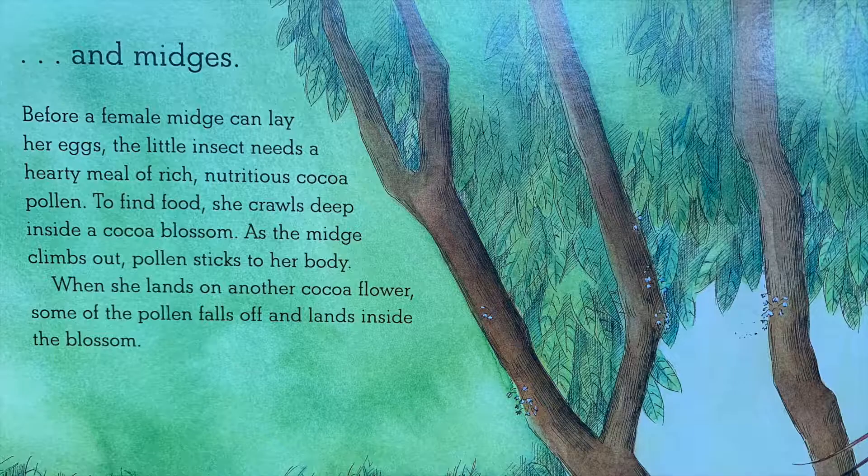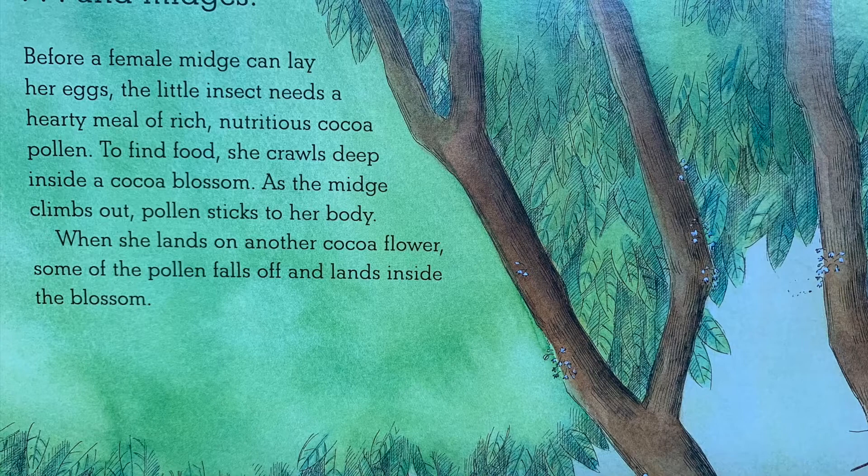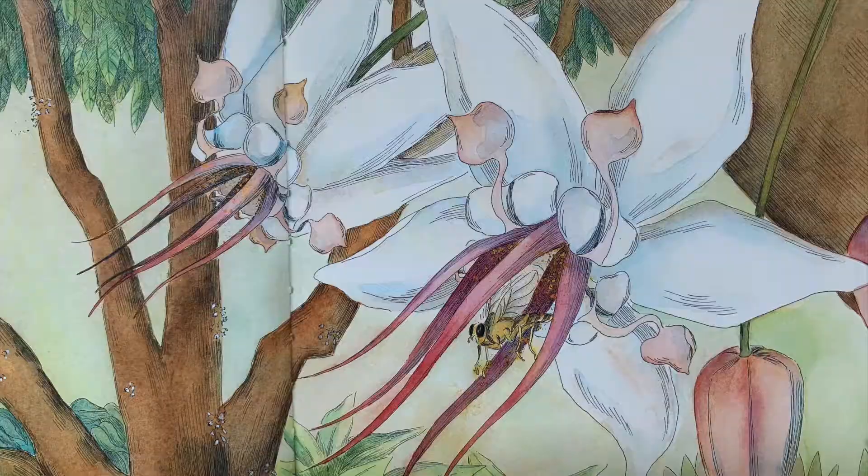And midges. Before a female midge can lay her eggs, the little insect needs a hearty meal of rich, nutritious cocoa pollen. To find food, she crawls deep inside a cocoa blossom. As the midge climbs out, pollen sticks to her body. When she lands on another cocoa flower, some of the pollen falls off and lands inside the blossom.